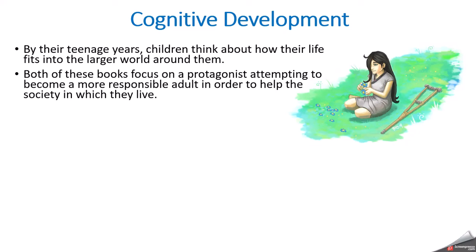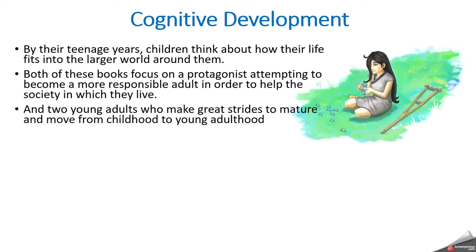We'll discuss in class online whether you think the characters are hurting or helping the society by their final actions. Both young adults, Kira and Jonas, make great strides to mature — they're truly moving from being a teenager to being an adult. Technically Jonas is 12 in the book, but in the movie they made him 17, which fits better in some ways. You can see Jonas moving from being a teenager to being an adult because of the things he finds out about the world in which he lives and the decisions he is forced to make.